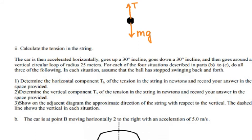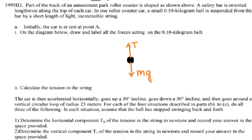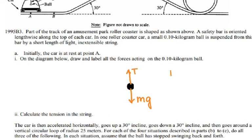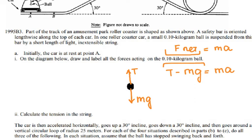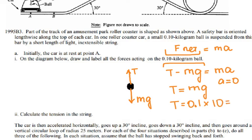For the next question, calculate the tension in the string. Because there is no acceleration and the car is at rest, the tension is equal to mg. Using F_net = ma, the net forces are the tension pointing up and mg pointing down, with no acceleration. So tension equals mg: 0.1 kilograms times 10 gives one newton.